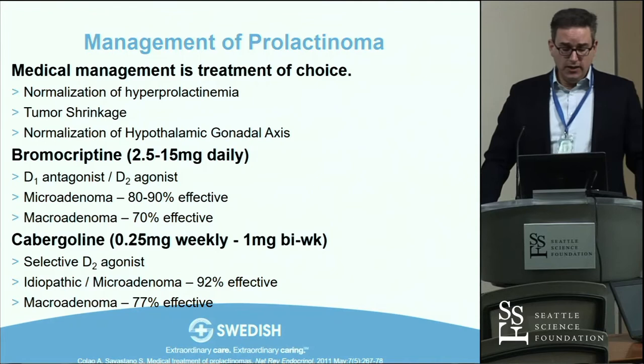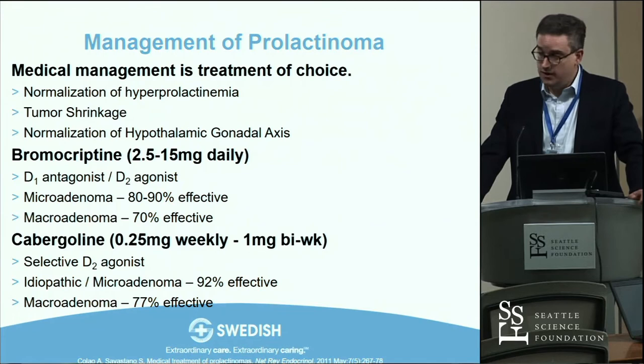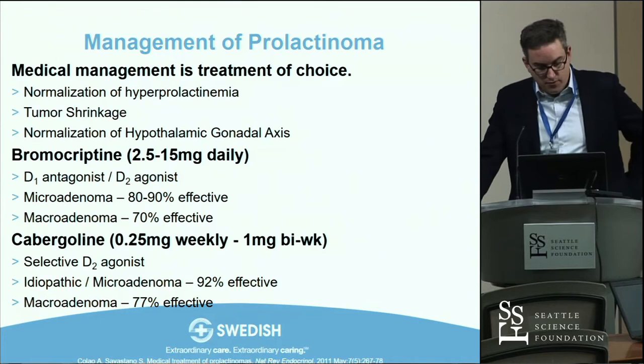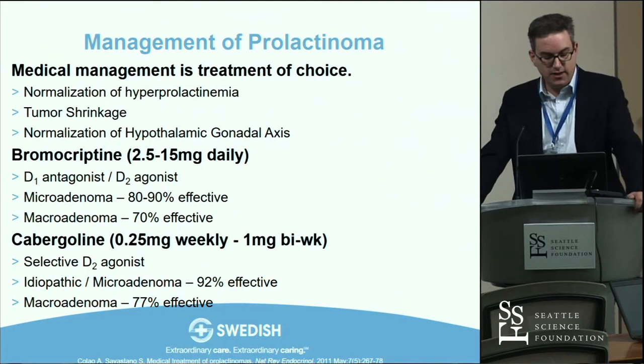The D2 receptor is also involved in cognitive pathways related to behavioral and psychiatric disorders including schizophrenia, so you don't want to give a D2 agonist to a schizophrenic. These agents are very effective for microadenomas — pituitary prolactinomas less than 10 mm have 90-plus percent efficacy — but when you get into the macroadenoma range, especially cystic macroadenomas, efficacy drops.